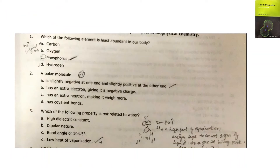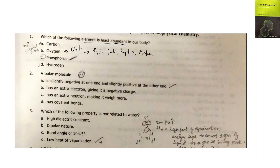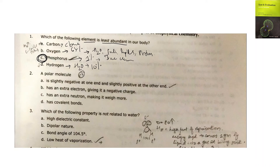Now let's discuss more questions from Pathfinders tests and evaluation. The first question: which of the following elements is least abundant in our body? Oxygen makes up about 65% of the total body volume — it's present in water and in almost all biomolecules such as fats, lipids, proteins, DNA, and RNA. Hydrogen makes up approximately 10%, and carbon forms the backbone of almost all biomolecules. Phosphorus is only about 1% of the total body volume, as it is a trace element. So the answer is phosphorus.